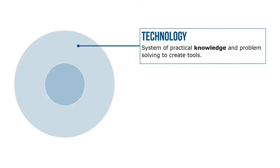As indicated by this model, technology is a system of practical knowledge and problem solving to create tools. That means technology is not necessarily reflected in things or hardware. Technology includes things like human language and efficiency, which are really just ideas without associated hardware or tools. So technology represents the ideas or concepts behind the tools we often associate with it.